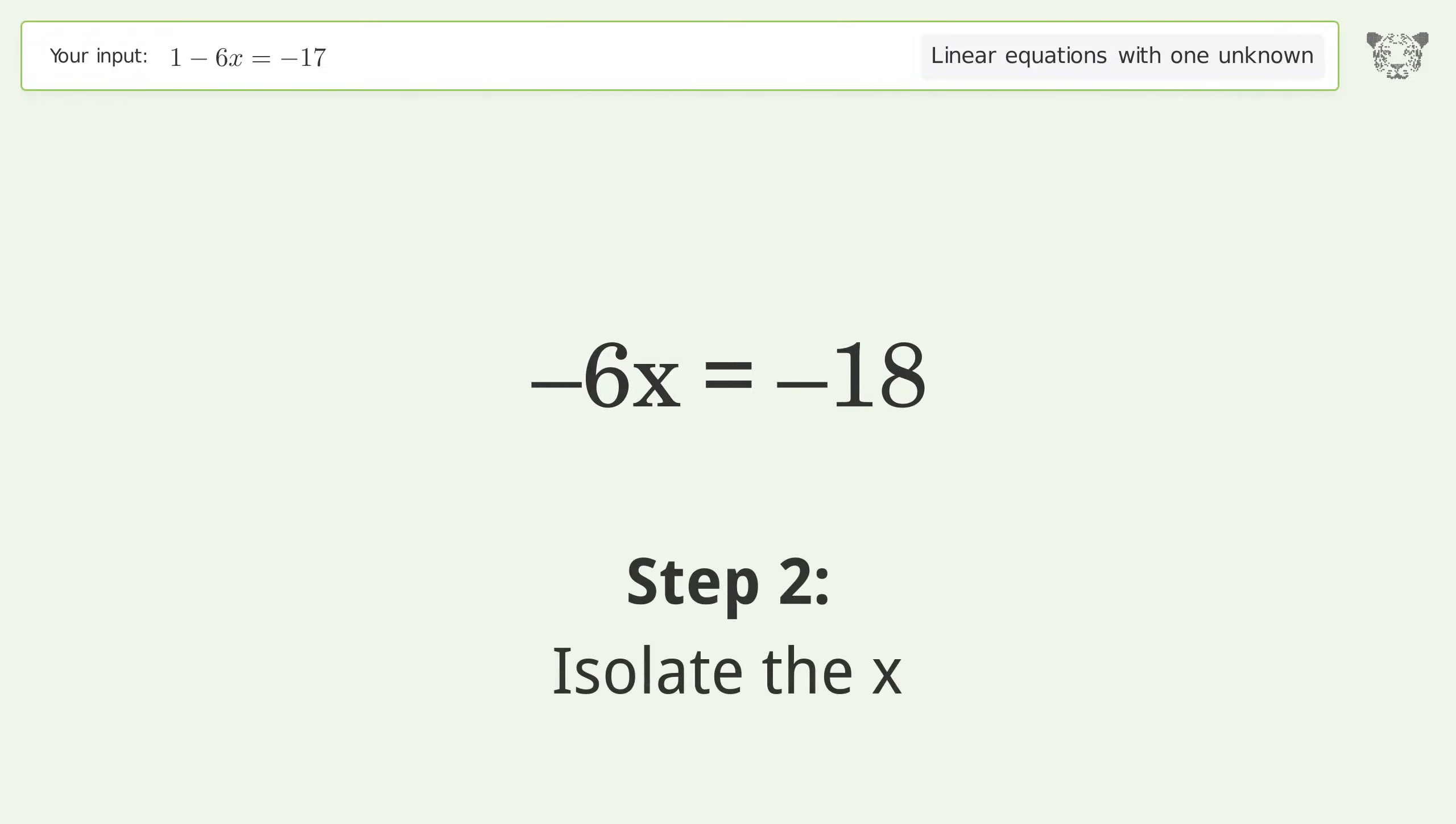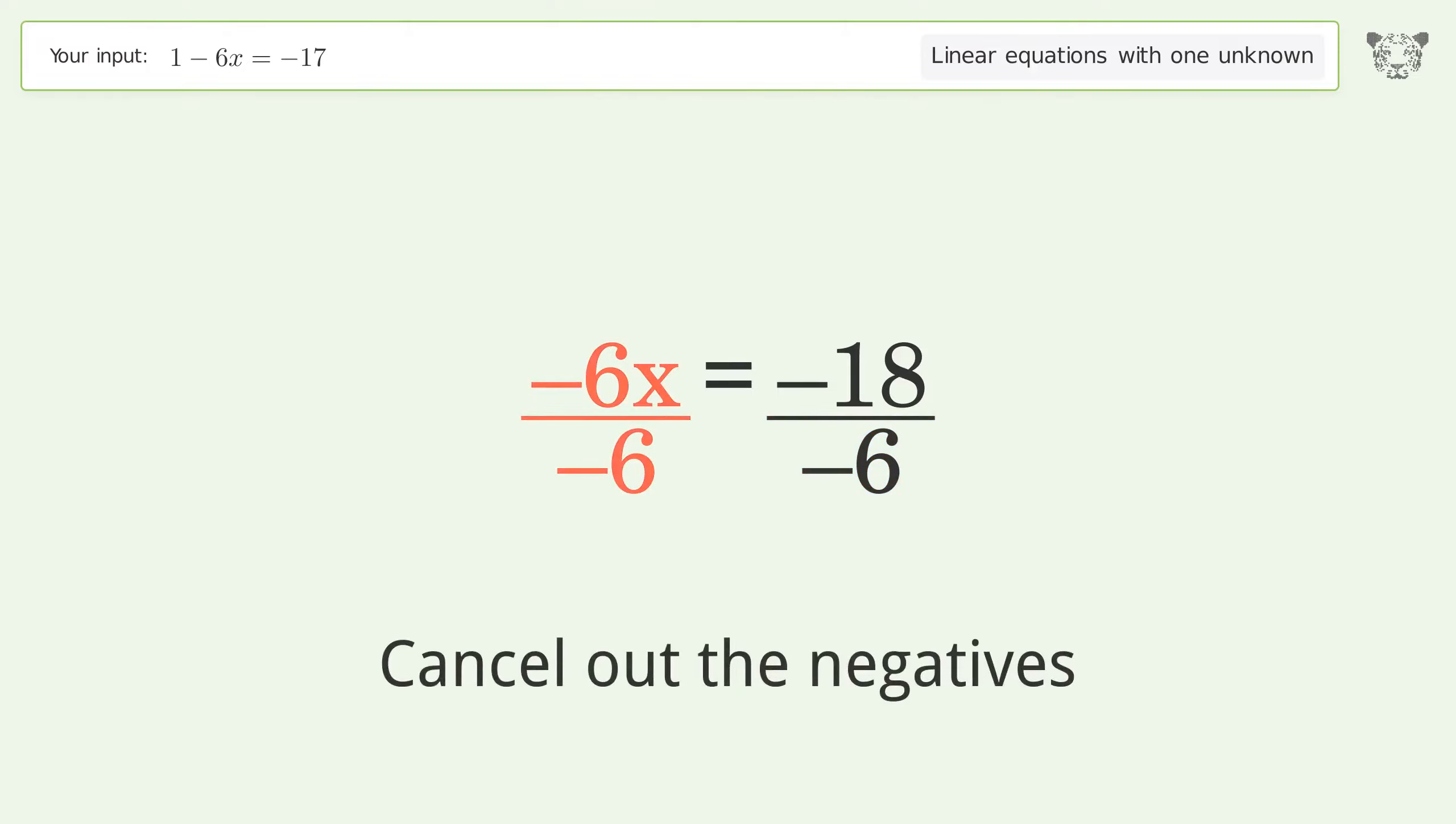Isolate the x. Divide both sides by negative 6. Cancel out the negatives.